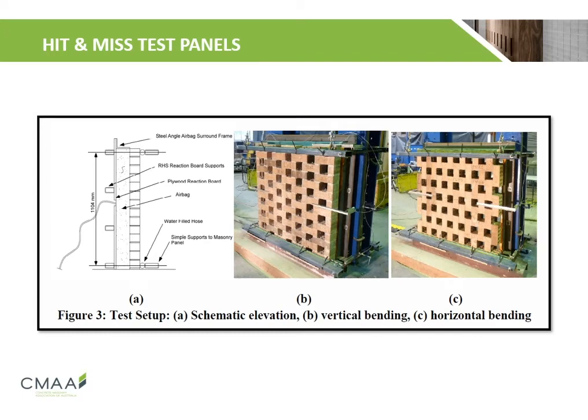Here is the test setup done by the University of Newcastle. Figure A shows the schematic elevation of the test setup. A steel angle and airbag surround the frame, while an airbag is placed in front of the brick wall. A plywood reaction board is placed in front of the airbag to determine the displacement of the brick wall under load. Figures B and C represent vertical bending and horizontal bending respectively.